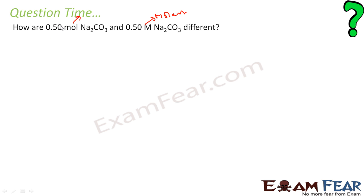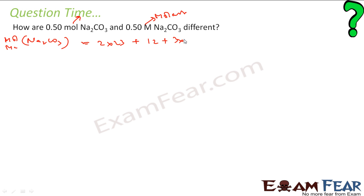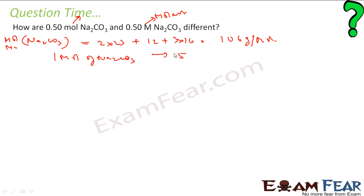When I say 0.5 mol of Na2CO3, let's find the molar mass. Sodium is 23, carbon is 12, and 3 oxygens give 3 × 16 = 48, so the molar mass comes out to be 106 grams per mole. Therefore, 1 mol of Na2CO3 implies 106 grams of Na2CO3.